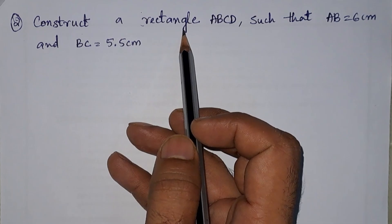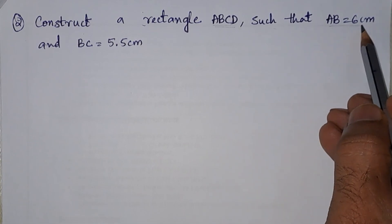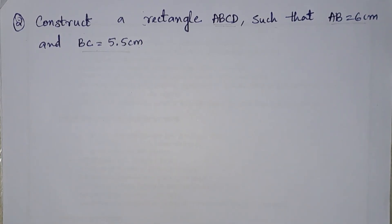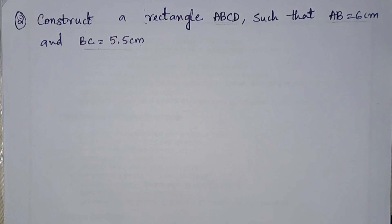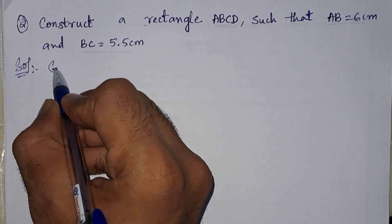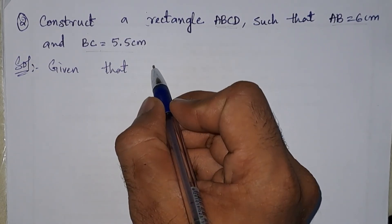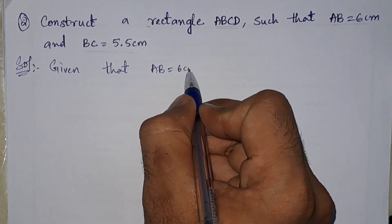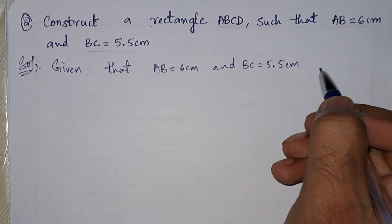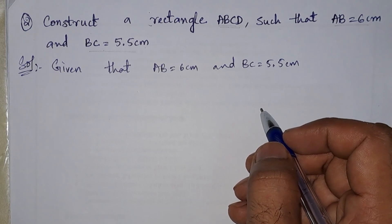Second problem: construct a rectangle ABCD such that AB equals 6 centimeters and BC equals 5.5 centimeters. In the solution, what is given: AB equals 6 centimeters and BC equals 5.5 centimeters. In a rectangle, opposite sides are equal and each angle equals 90 degrees.